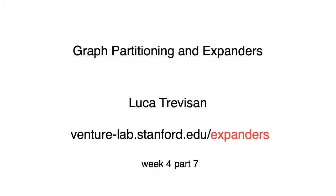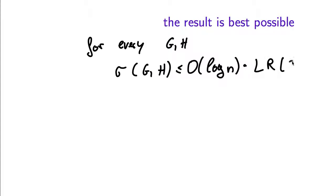Can we do any better by any alternative approach to rounding the relaxation? What we have proved is that for every input G, H to the sparsest cut problem, the actual optimum of the problem is at most order of log n times the optimum of the Leighton-Rao relaxation.